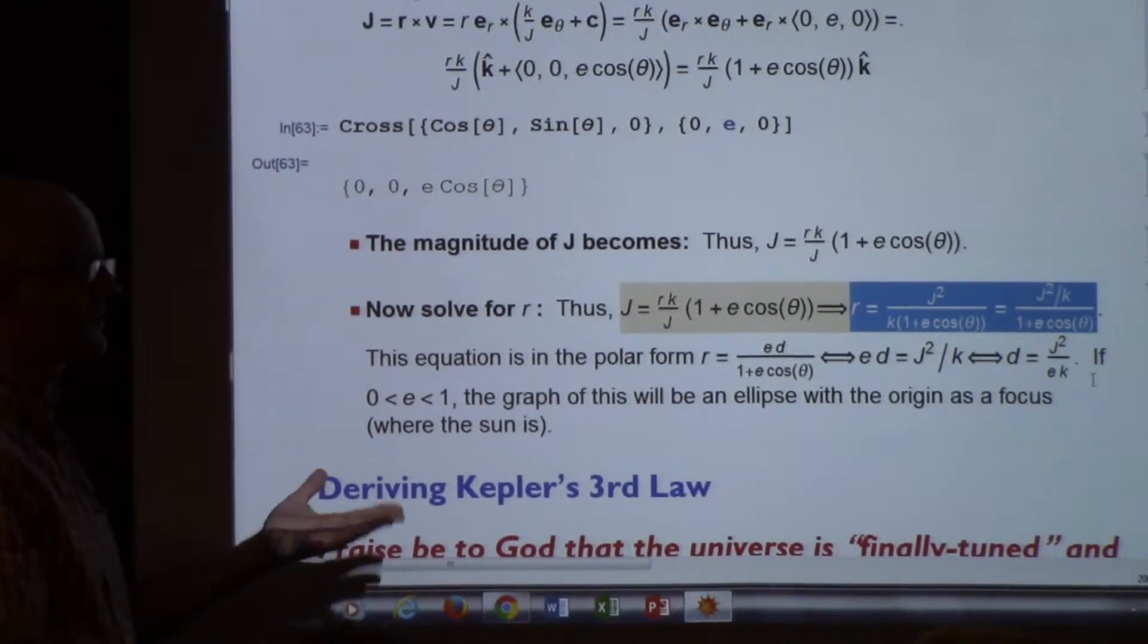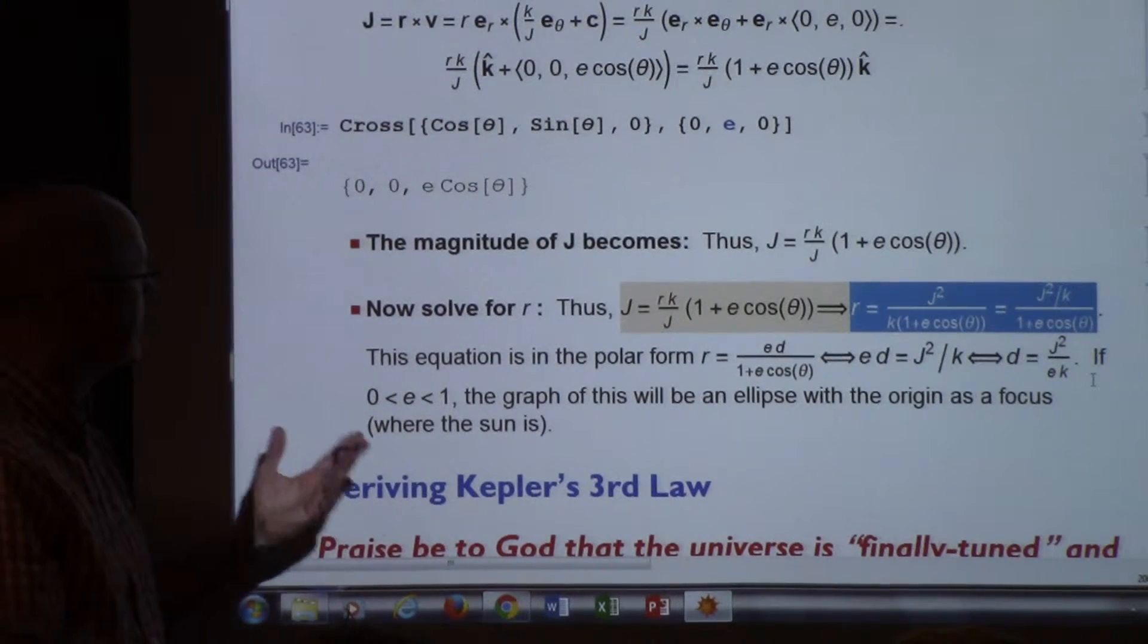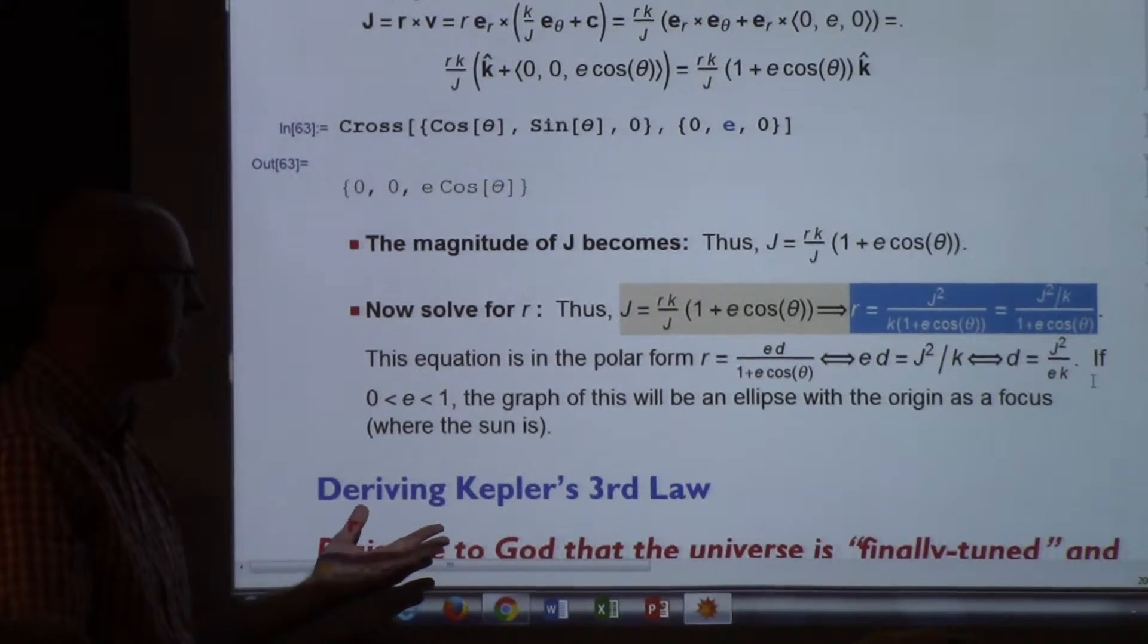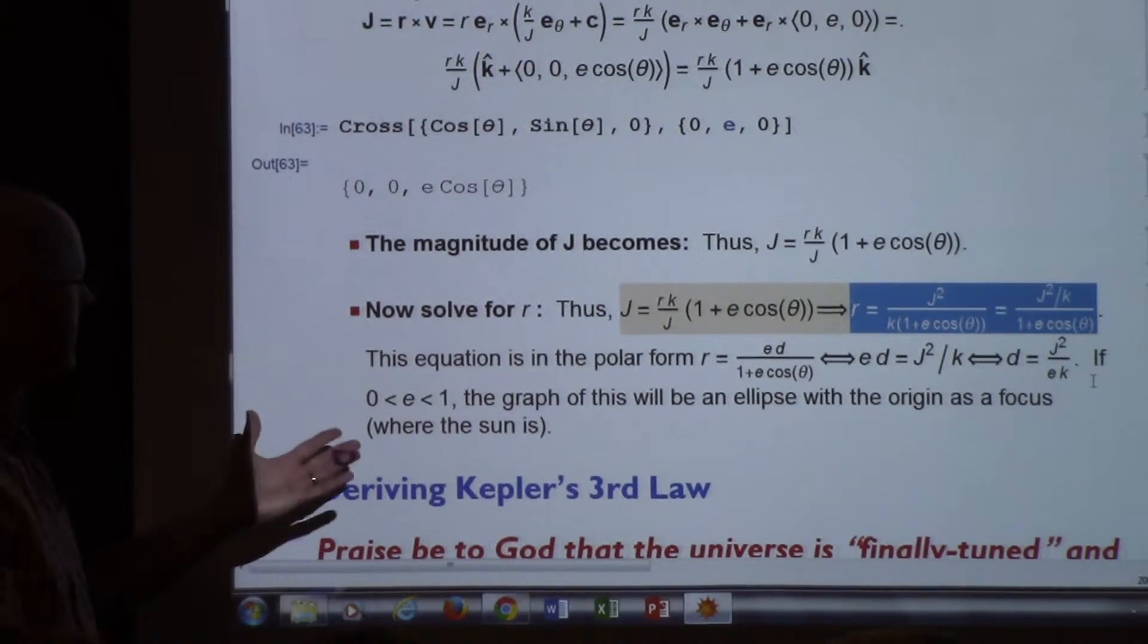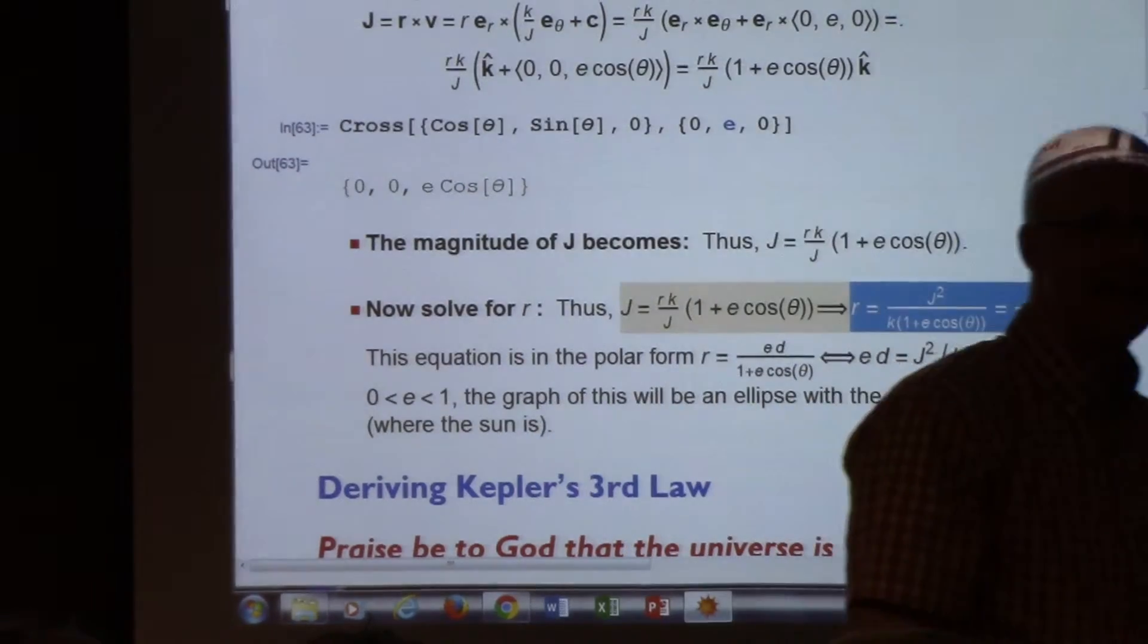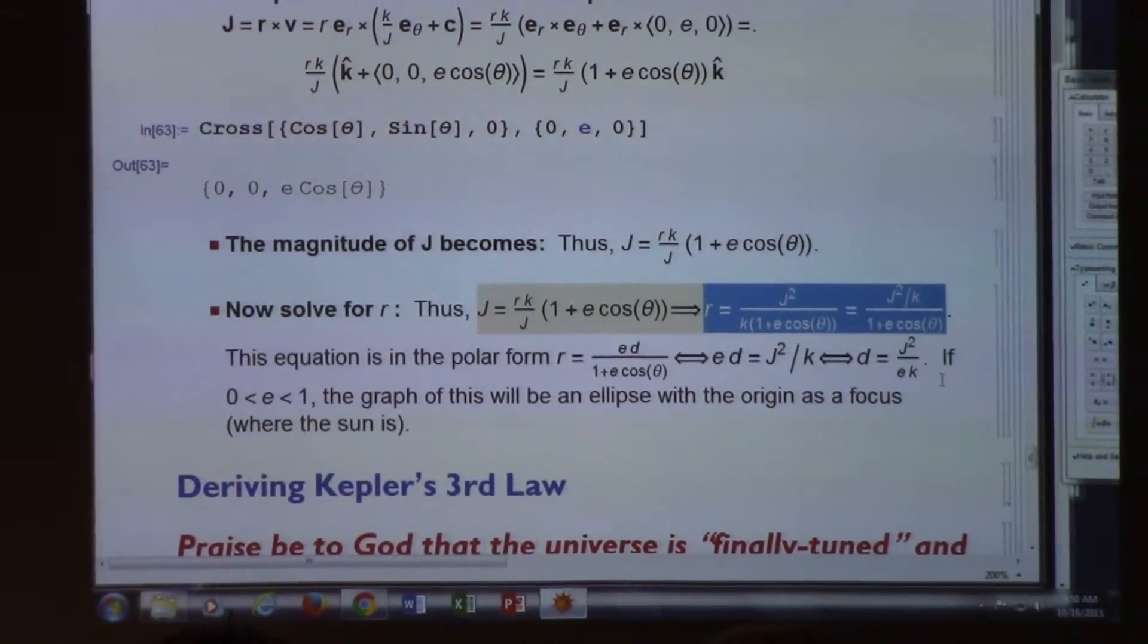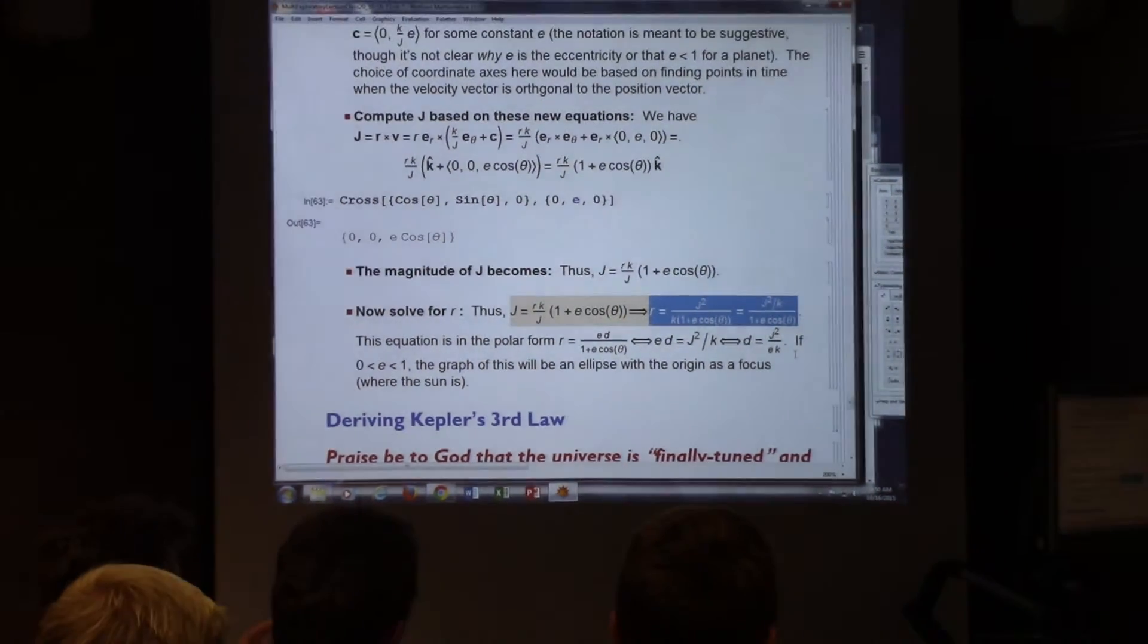If e is between 0 and 1, it will be an ellipse. If e is greater than 1, it will be a hyperbola, just one branch in the hyperbola. If e equals 1, which would be very rare in real life, it would be a parabola. If e equals 0, it would be a circle. That does effectively prove Kepler's first law because that is the polar equation for such a thing, at least in the case where e is between 0 and 1.